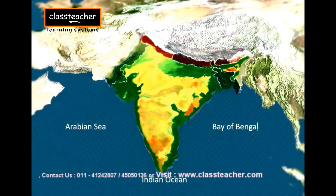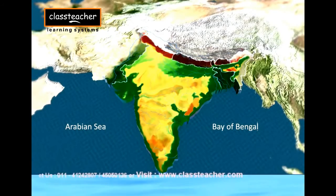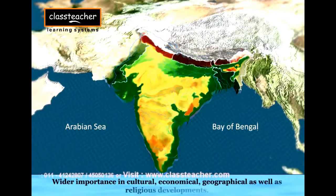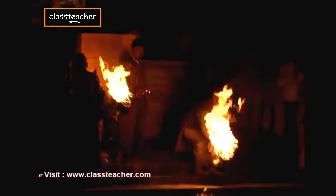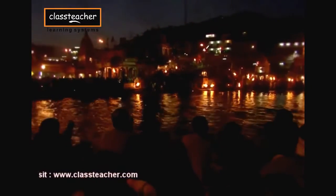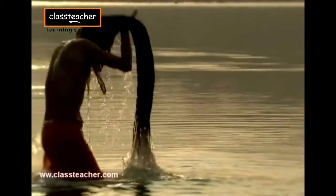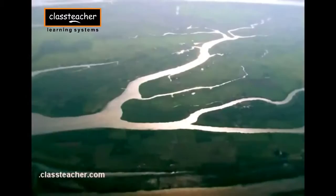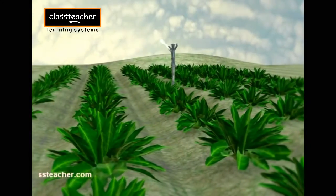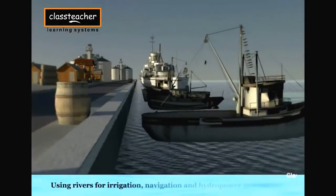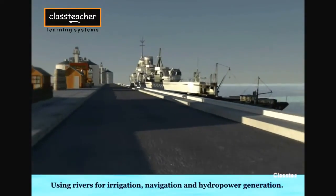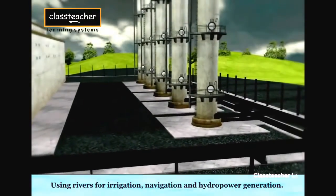Rivers form one of the most distinctive features of India. Amongst its many geographical marvels, they also carry wider significance in cultural, economic, geographical, as well as religious developments. The rivers in India are considered as gods and goddesses. Rivers have been of fundamental importance throughout human history. Water from the river is a basic natural resource. Using rivers for irrigation, navigation, and hydropower generation is of special significance, leading to a flourishing Indian economy.